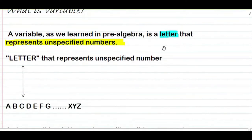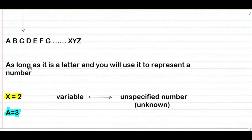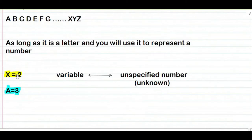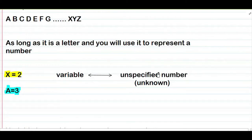Yung letter na to, the letter that represents specified numbers, mula A hanggang Z. As long as this is a letter and you will use it to represent a number, pwede mo siya gamitin bilang variable. Tulad nito: yung X na to, ang nila-represent niya is 2. Yung A na to, ang nila-represent niya is 3. Variable ay equal to unspecified number — nila-represent niya yun.